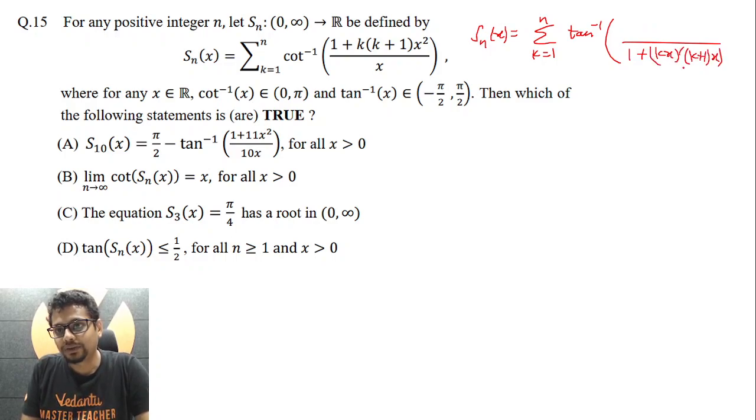So we'll be looking to create tan inverse alpha minus beta divided by 1 plus alpha beta sort of thing, so that we can create the telescopic series tan inverse alpha minus tan inverse beta. So here in numerator there would be x but I will smartly write it as (k+1)x minus kx, which essentially is x only.